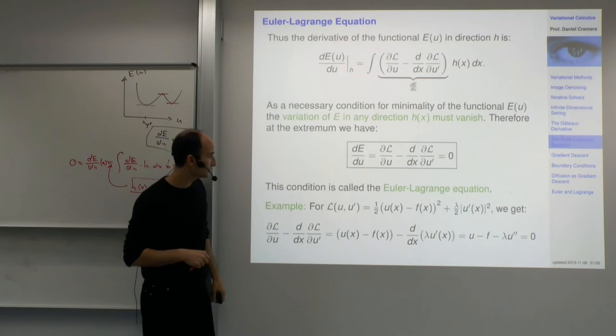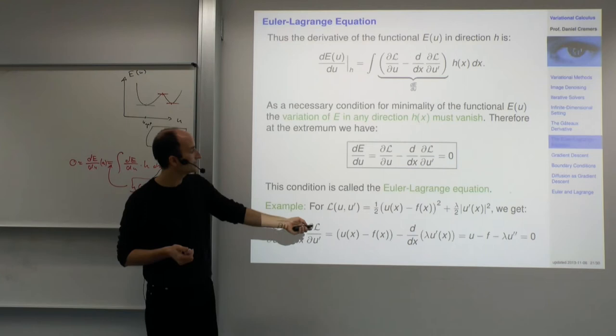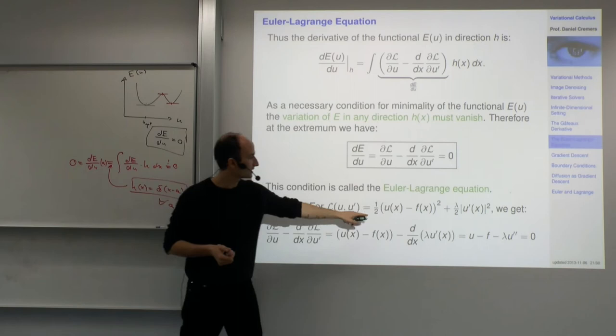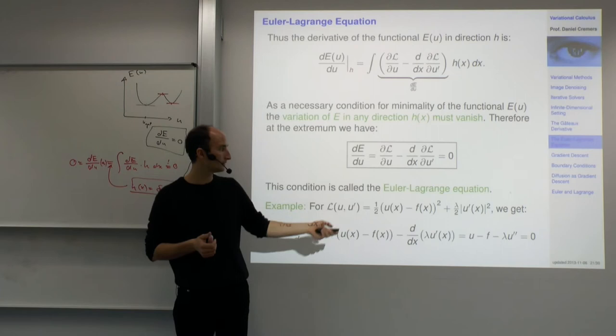To give a specific example, we talked about denoising as the motivating example for variational methods. Here is the Lagrangian L for the denoising case: the data term (u minus f) squared, plus lambda over 2 times the smoothness term, which is the derivative of u squared.